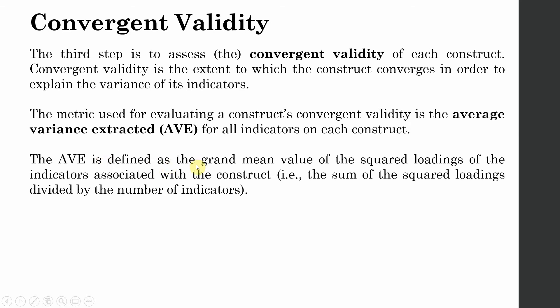The AVE is defined as the grand mean value of the squared loadings of the indicators associated with the construct. So what we do is, we simply take the square of each of the loadings that we did earlier here, and then sum the squared loadings.